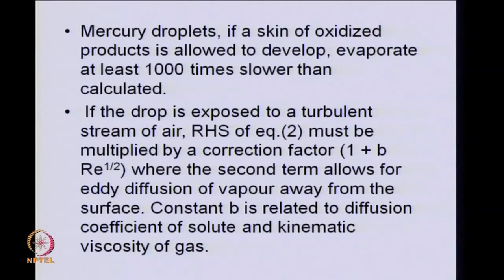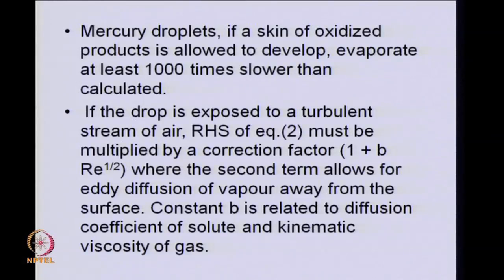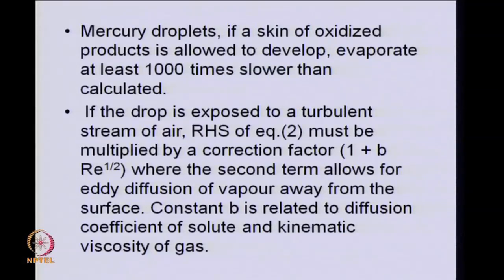Consider a slightly different scenario: if the drop under consideration is present in a turbulent stream of air. Unlike what we have seen so far, the gas phase resistance was given by A over D — the radius of the droplet divided by the diffusivity in the gas phase — but that is true only if the air around that drop is stagnant. If the air is present in turbulent conditions, hydrodynamic factors come into picture: velocity, density, viscosity, and drop size all come into play.